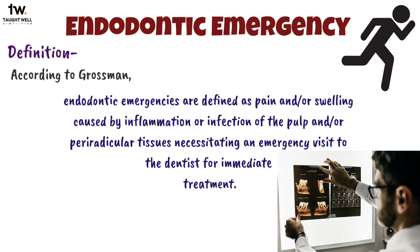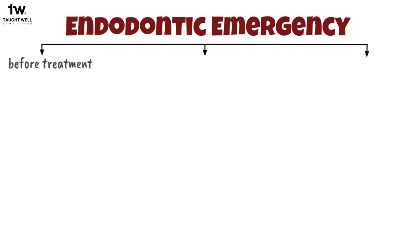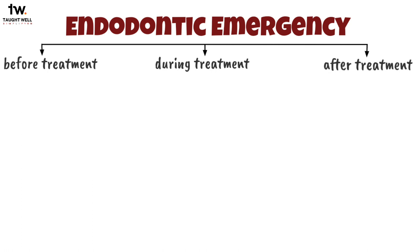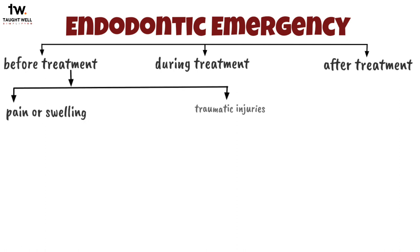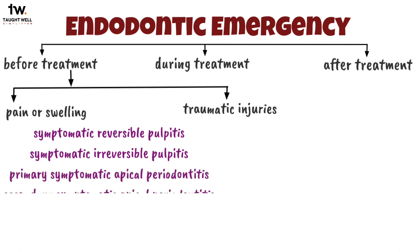As dental surgeons, it is our duty and responsibility to be knowledgeable about emergencies and be capable of treating them effectively. Endodontic emergencies are broadly classified as occurring before treatment, during treatment, and after treatment. Emergencies occurring before treatment are further classified into emergencies presenting with pain or swelling and traumatic injuries. These include symptomatic reversible pulpitis, symptomatic irreversible pulpitis, primary symptomatic apical periodontitis, secondary symptomatic apical periodontitis, and cellulitis.